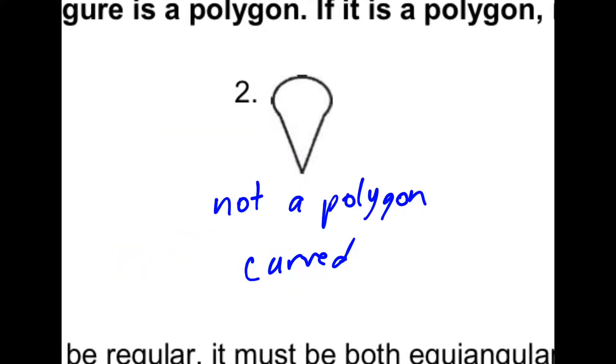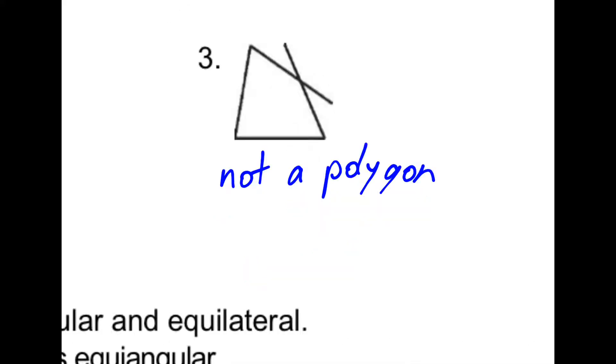Number two is not a polygon. Polygons are formed from straight lines. Number three is also not a polygon. They must be closed, so there would have to be another line like this, and there is not.